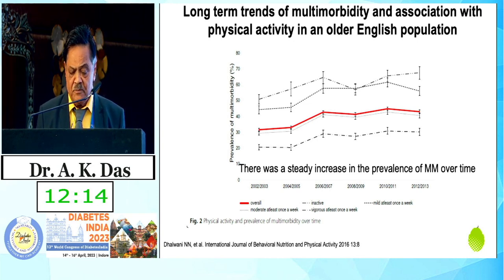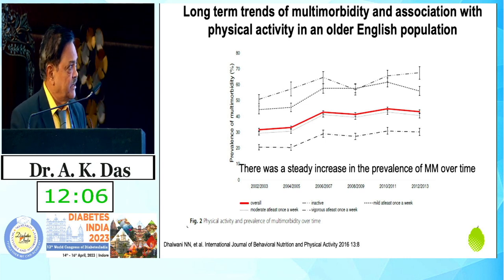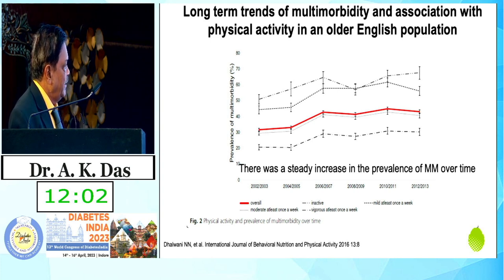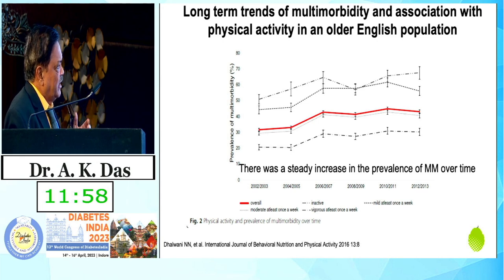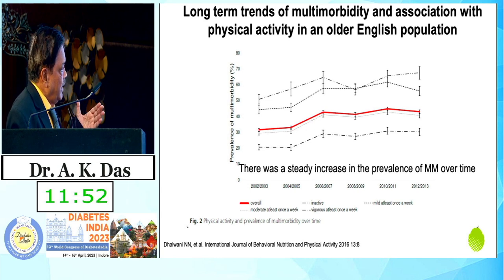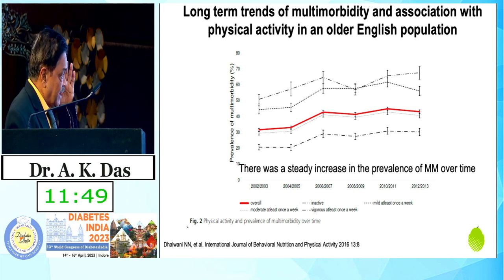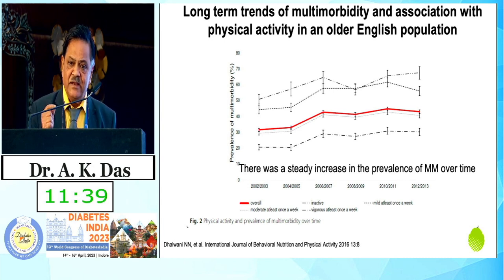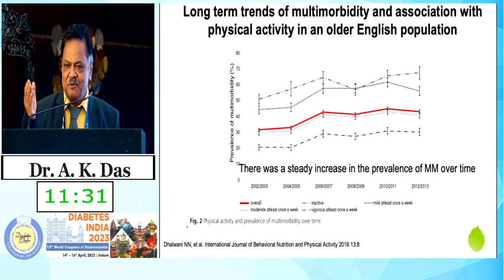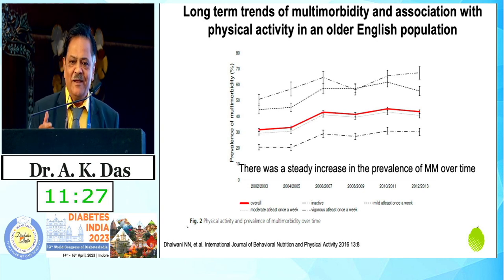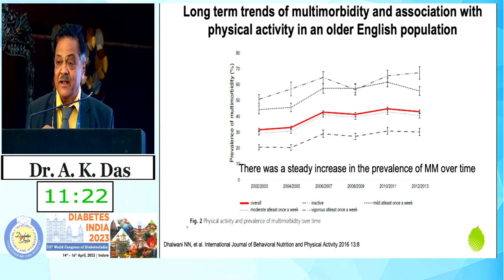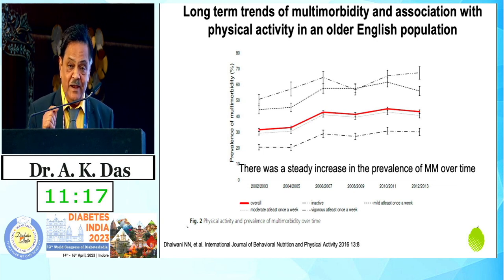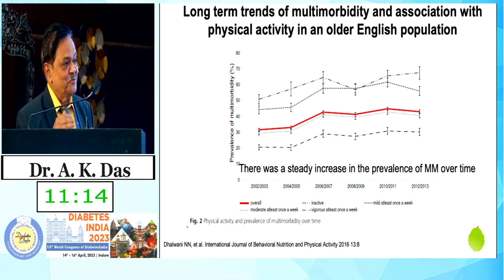It has been shown that long-term trends of multimorbidity and association with physical activity are significant. In an older English population, people who do mild physical activity at least once a week — compared to those who are inactive — show a significantly lower prevalence of multimorbidity. People who are completely inactive, working only from their house to the garage, compared to people who do physical activity whether mild, moderate, or vigorous once a week, show a much higher multimorbidity burden. Therefore, physical activity has evolved as a very important practice to reduce comorbidity.